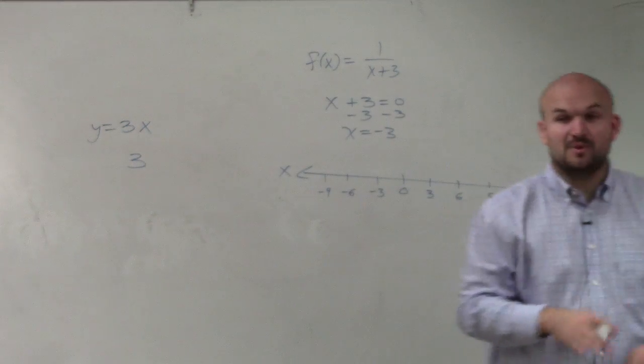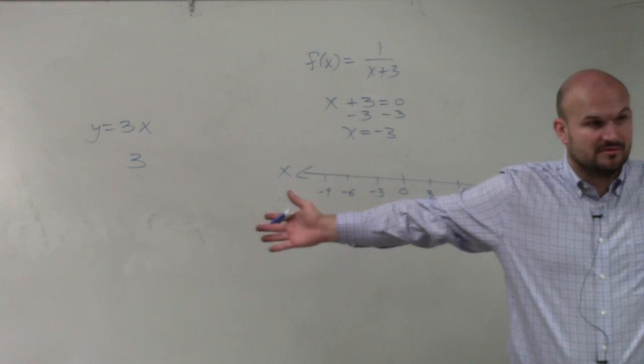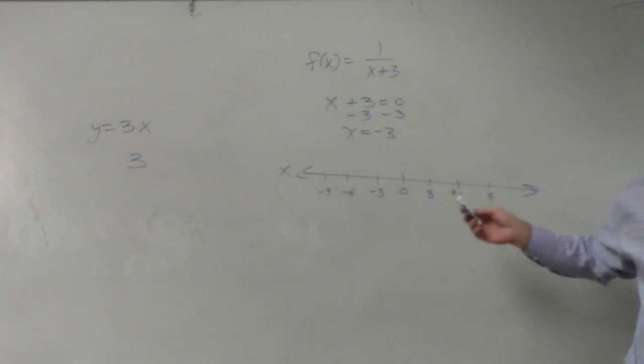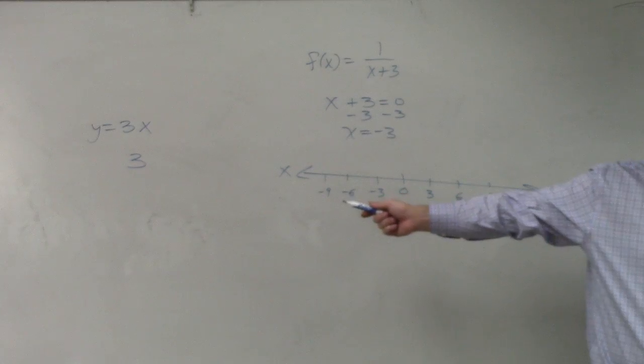You guys agree with me? This number line contains all the numbers, all real numbers, left and right, right? Goes to positive infinity, goes to negative infinity, correct?